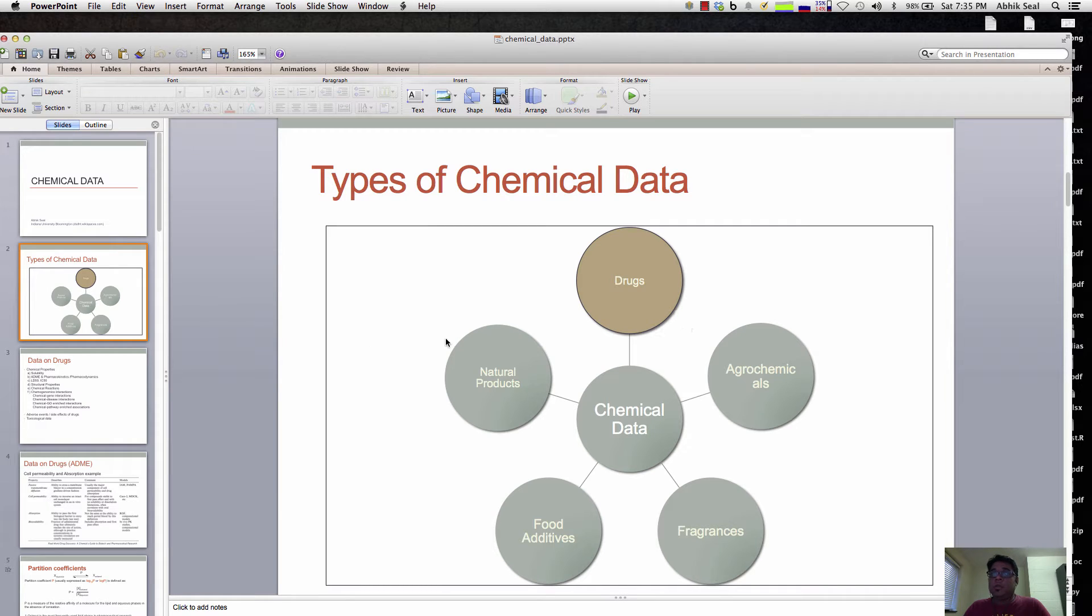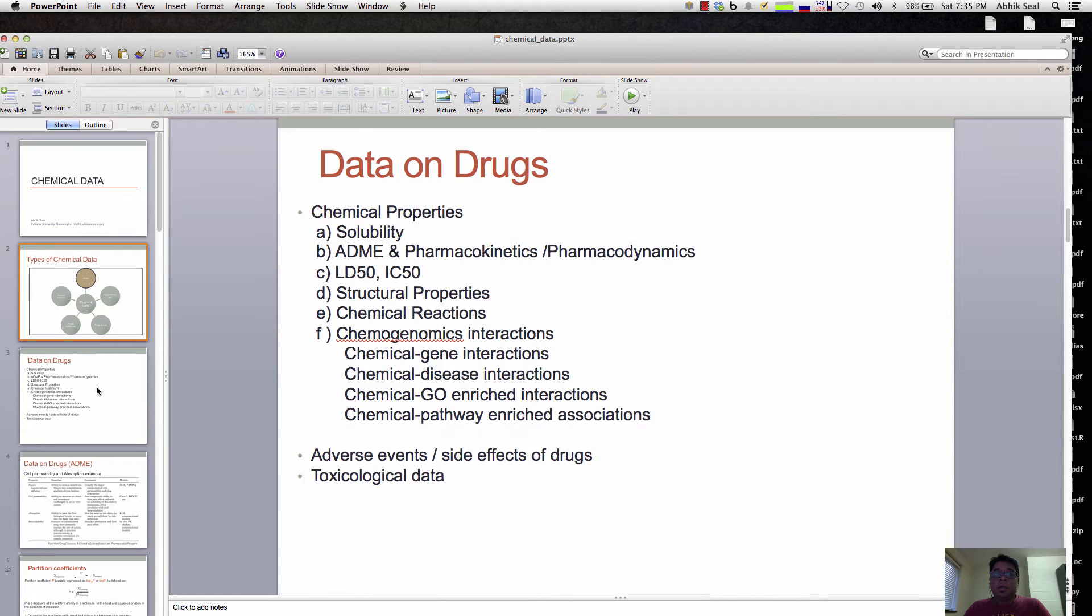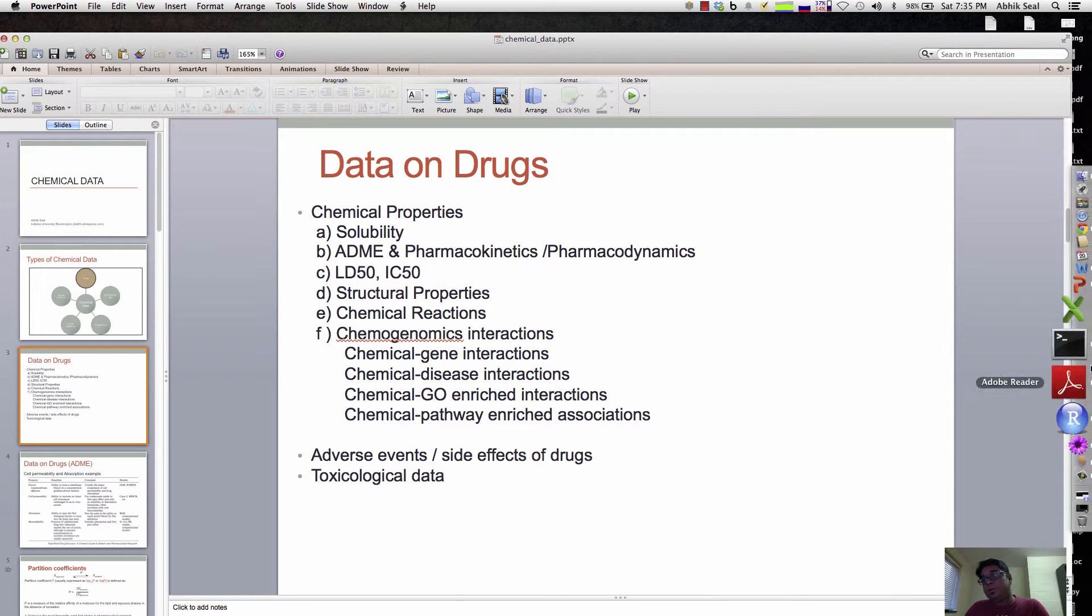So what data do we have about drugs? For example, chemical properties like solubility, ADME and pharmacokinetics and pharmacodynamics, the lethal dose LD50 and inhibitory concentration IC50. There are structural properties like molecular weight, log P, and chemical reactions where compounds react to produce other products.